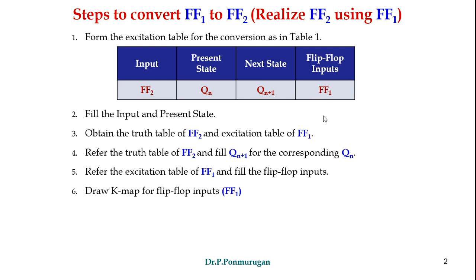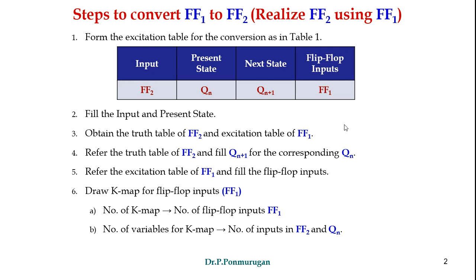The next step is to draw the K-map for flip-flop inputs. The number of K-maps depends on the number of flip-flop inputs of FF1, and the number of variables for each K-map depends on the number of inputs in FF2 and Qn. The last step is drawing the logical diagram.